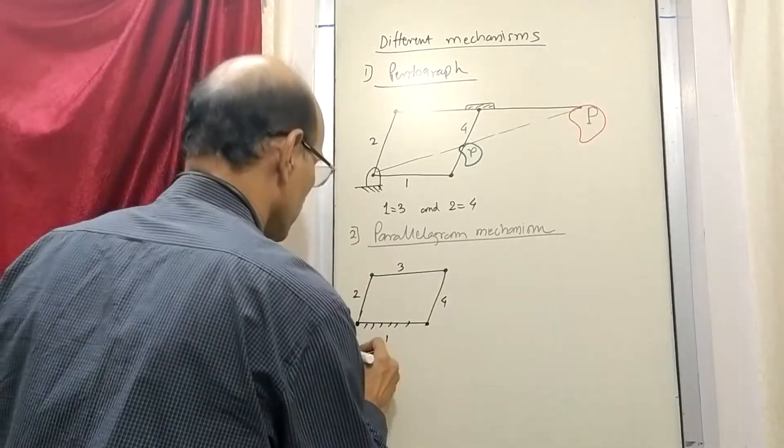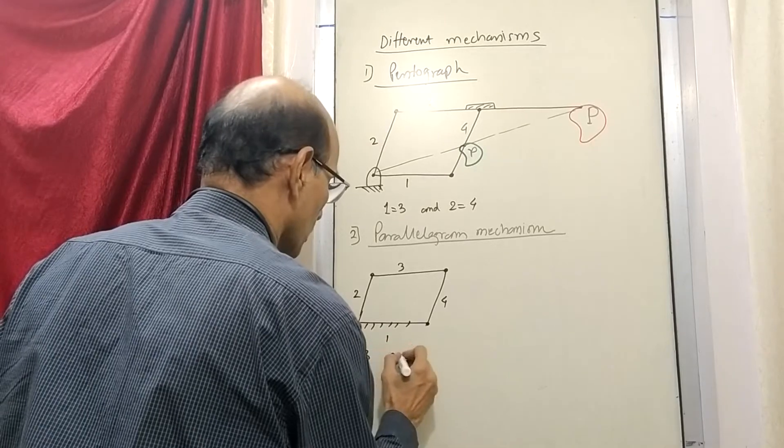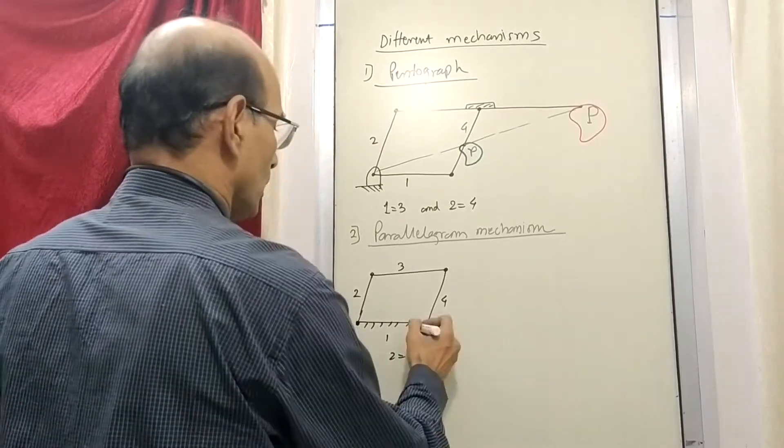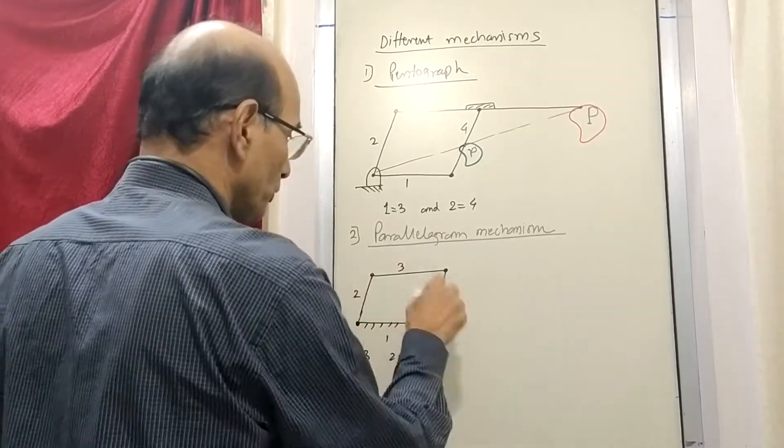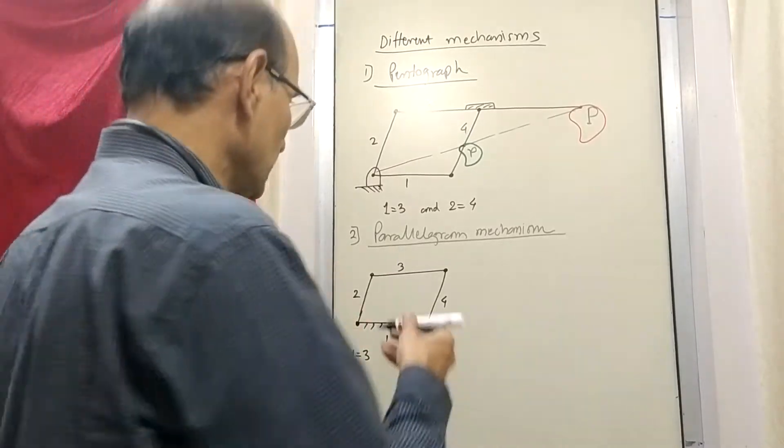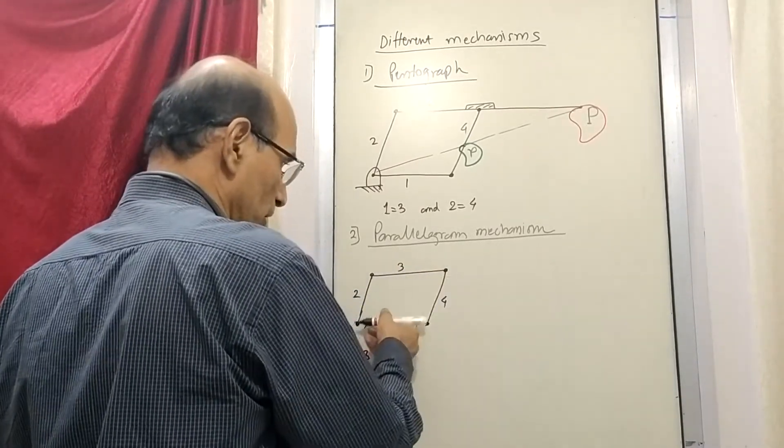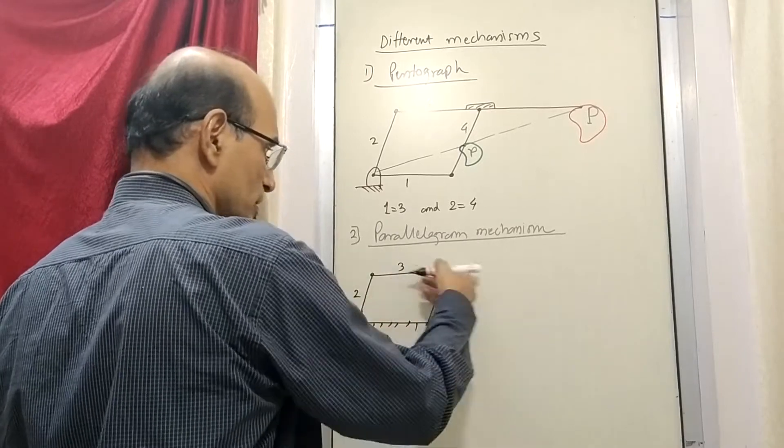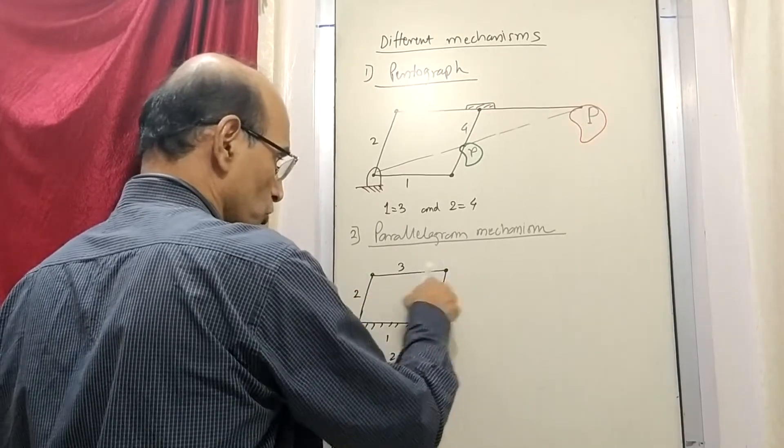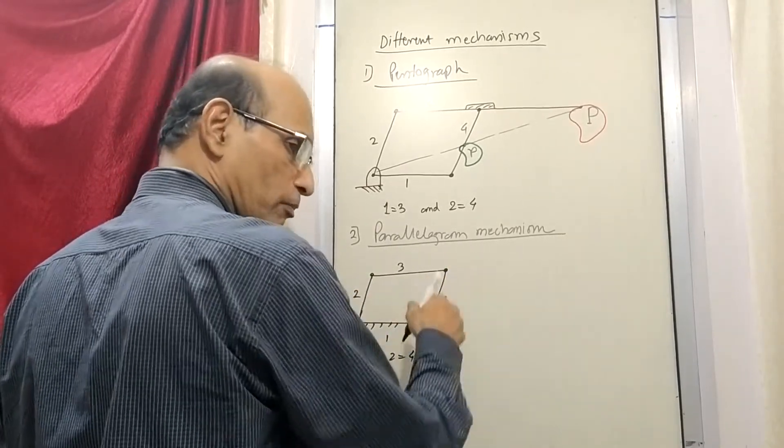Link one is same as link three and one is fixed. So now what happens is this link number three will move parallel to link number one all the time. When you move like this it will move parallel. Even this will also, both of them two and four, they will move parallel.